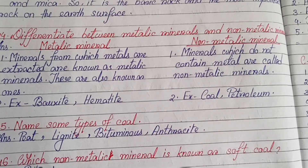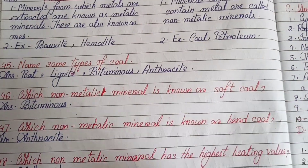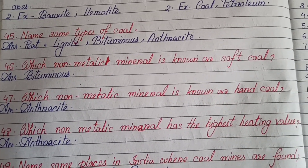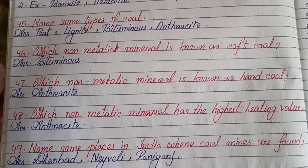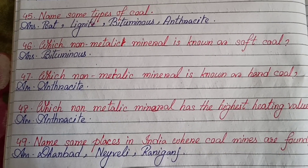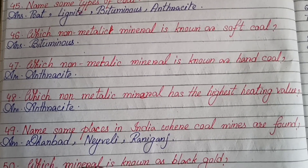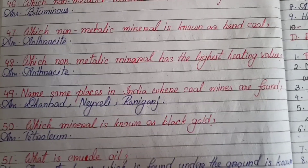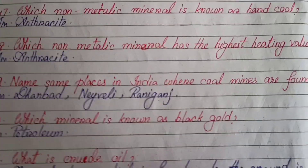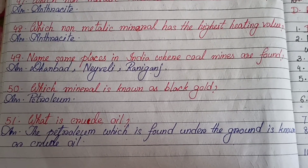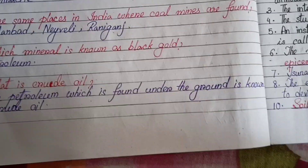Examples of metallic minerals: bauxite and hematite. Non-metallic minerals: coal and petroleum. Name some types of coal: peat, lignite, bituminous, anthracite. Which non-metallic mineral is known as soft coal? Bituminous. Which non-metallic mineral is known as hard coal? Anthracite. Which non-metallic mineral has the highest heating value? Anthracite. Name some places in India where coal mines are found: Dhanbad, Neyveli, Raniganj. Which mineral is known as black gold? Petroleum. What is crude oil? The petroleum which is found under the ground is known as crude oil. Here we come to the end — we have solved the chapter Rocks and Minerals.